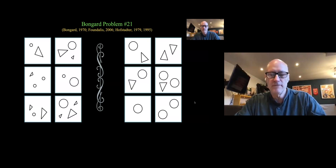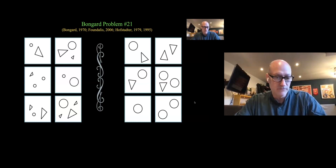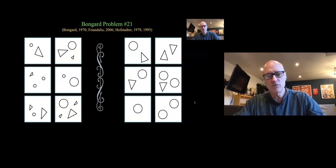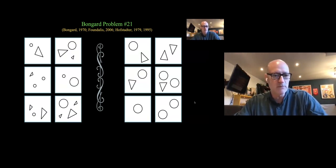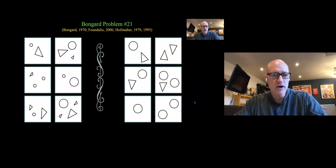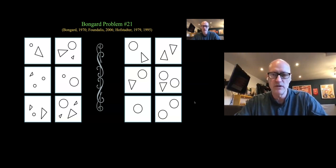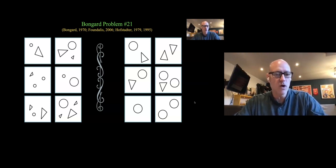The Bongard problems were developed by an early artificial intelligence researcher, a Russian by the name of Michael Bongard. These problems were popularized, at least in my mind, by Doug Hofstadter in his 1979 book 'Gödel, Escher, Bach,' where he presented many of these problems as a challenge for AI systems and a good way to think about what human concept learning involves.